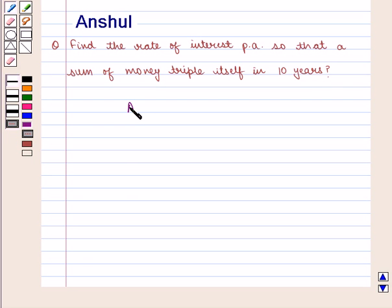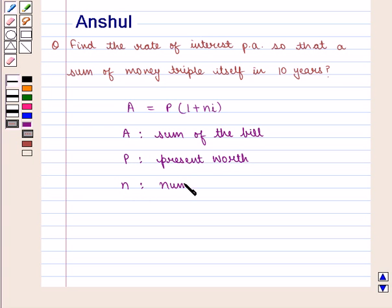We know the formula A is equal to P into 1 plus N into I, where A denotes the sum of the bill, P is the present worth, N is the number of years, and I is the interest of 1 dollar for 1 year.